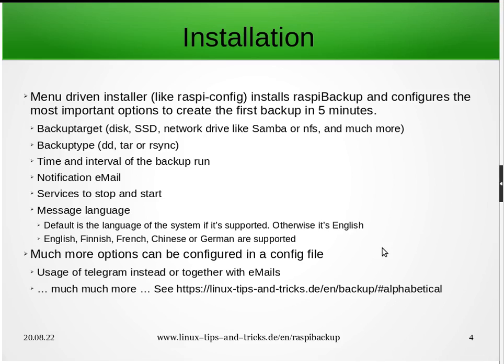First, you define the backup target, which can be a disk, SSD, or network drive such as SMB, NFS, or anything else. You also select the backup type — either DD or TAR, both of which are full backups, or an RSYNC backup which is a full backup on the first run and then incremental backups thereafter. You then set the time interval for the backup run; the default is one week.